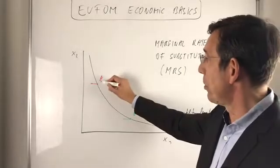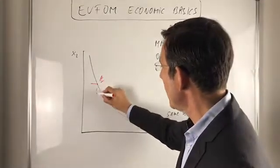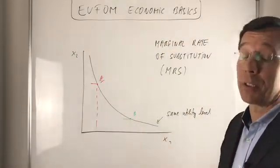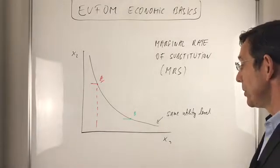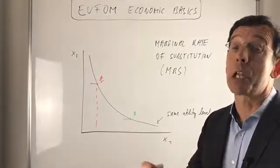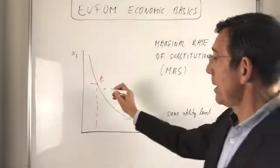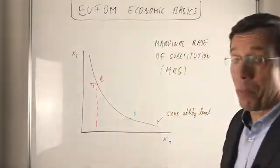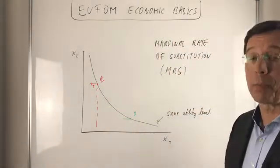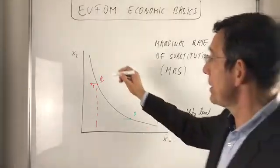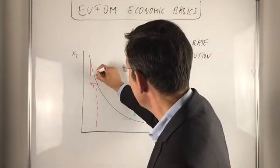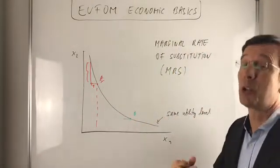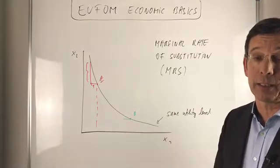Now let's go to point A. In point A we have only a little bit of x1, so the marginal utility of an additional unit consumed of x1 is quite high. So if you have to give up one unit of x1 — let's say that's one unit — since we only have a little bit, we have to be compensated by a lot of x2 to remain on the same utility level. That's the intuition.